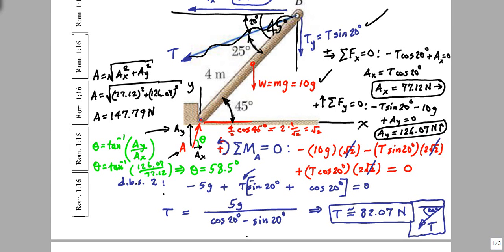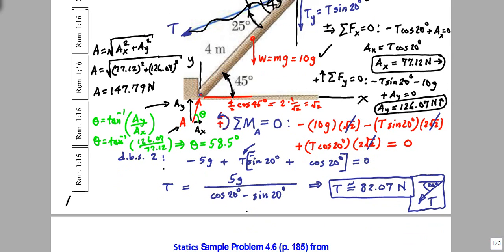So let's write out our answer. That means that our A is equal to 147.79 Newtons oriented at 58.5 degrees.